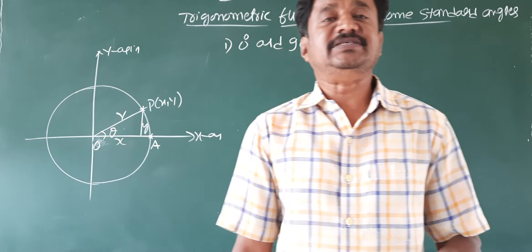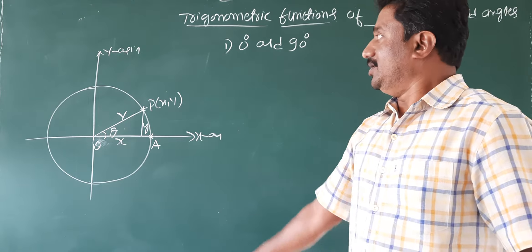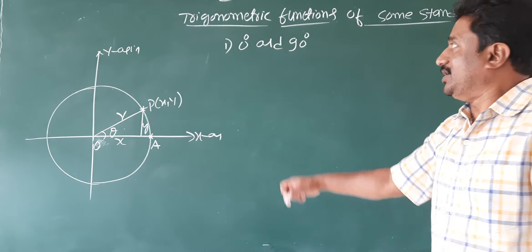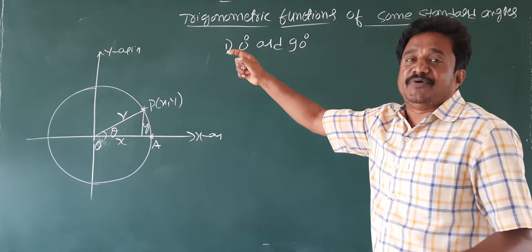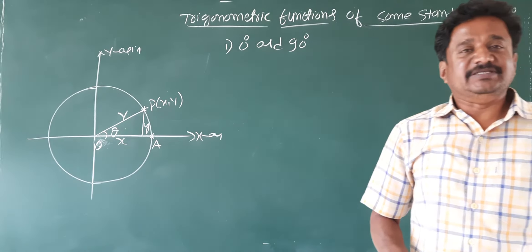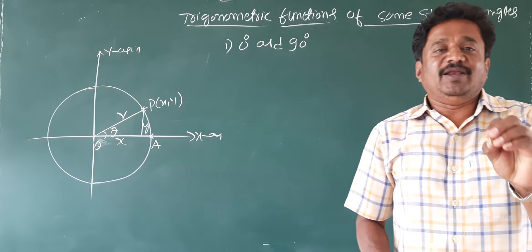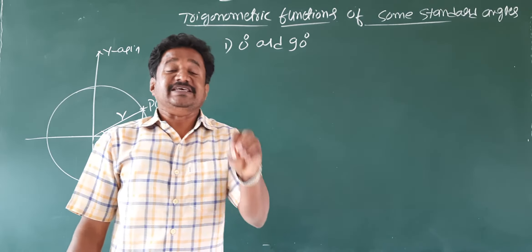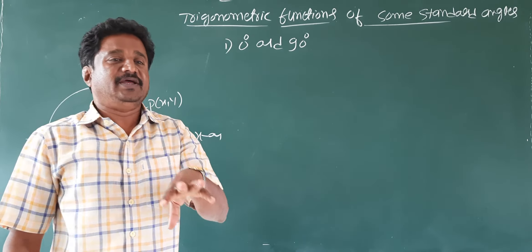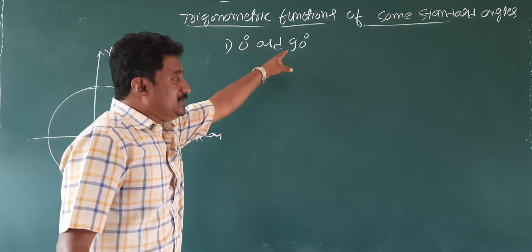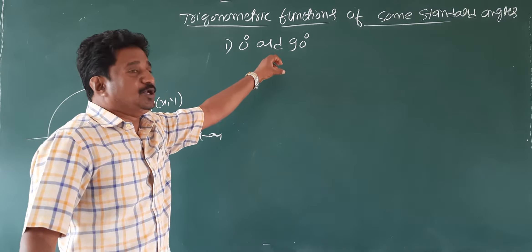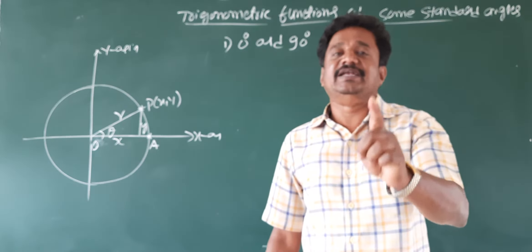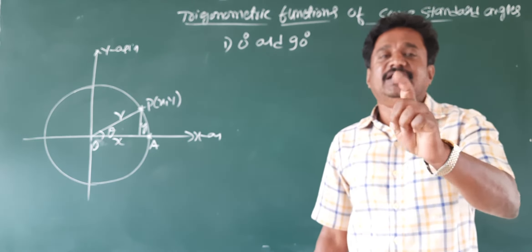Students, this is basics class number 17. In this class, let us have a discussion about trigonometric functions of two angles. Let us find the values of sine 0 degree, cos 0 degree, tan 0 degree, secant 0 degree, cosecant 0 degree, cot 0 degree, and similarly, trigonometric functions of 90 degree — sine 90, cos 90, tan 90, and so on.